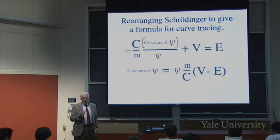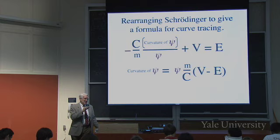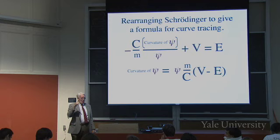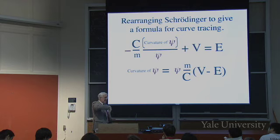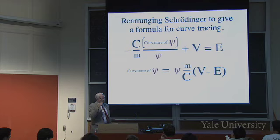If you have a formula for the curvature — that's how fast the slope is changing — and you know the initial height and initial slope, then you know where the next point will be. In a computer, if the curve is changing rapidly and you take a finite step, the slope will have changed during your step, so you have to take smaller and smaller steps. The curvature is the second derivative.